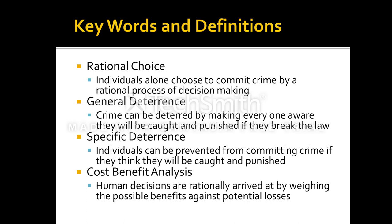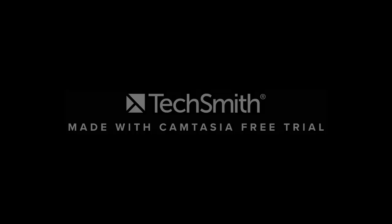If you need to do some studying, here are some quick definitions — though I emphasize you should go back and review them in more detail. Rational choice is defined as: individuals alone choose to commit crimes by a rational process of decision making. General deterrence is the idea that crime can be deterred by making everyone aware that they will be caught and punished if they break the law. Specific deterrence is the idea that individuals can be prevented from committing crime if they think they will be caught and punished. Cost-benefit analysis is the idea that human decisions are rationally arrived at by weighing the possible benefits against the costs.